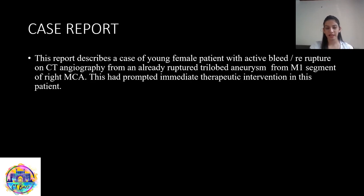This report describes the case of a young female patient with active bleed or re-rupture on CT angiography from an already ruptured tri-lobed aneurysm from the M1 segment of the right MCA artery. This had prompted immediate therapeutic intervention in this patient.